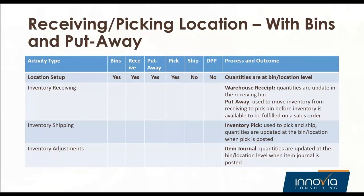The next option adds put away. After processing the warehouse receipt, quantities are added to the receiving bin. Then the system can either automatically create a put away document — depending on flags set in Business Central — or you can create put away documents manually to take inventory out of the receiving bin and move it to the put away bins. Inventory shipping and adjustments work exactly the same as the previous configuration.